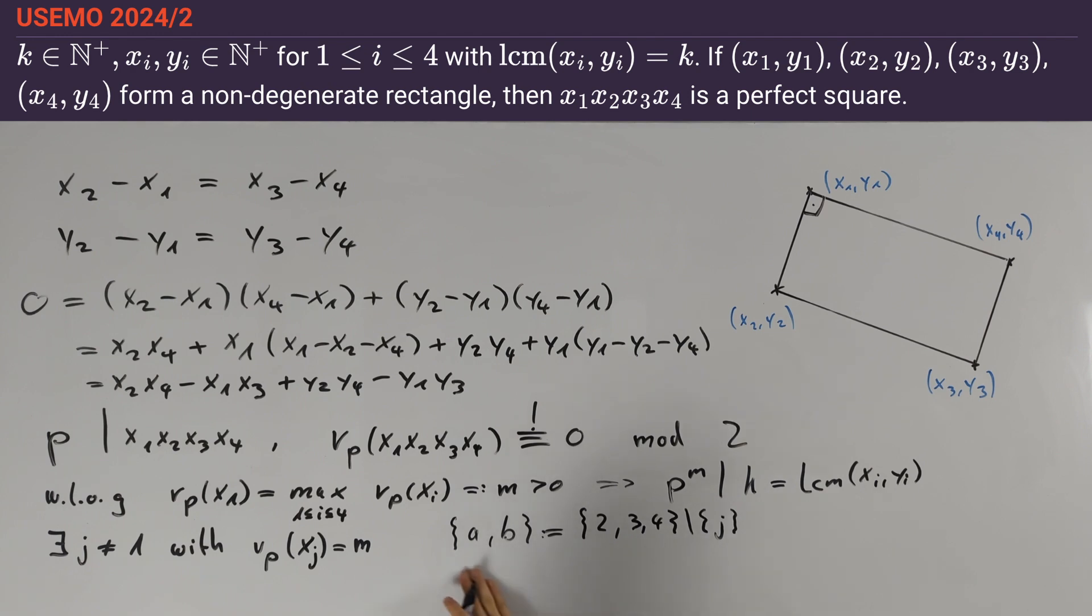It is left to prove that nu_p(xa) ≡ nu_p(xb) mod 2. Indeed we will prove that nu_p(xa) and nu_p(xb) are equal. We'll prove this by contradiction.